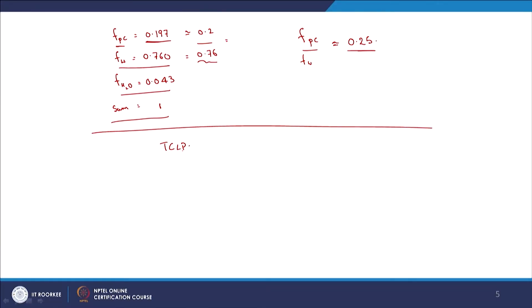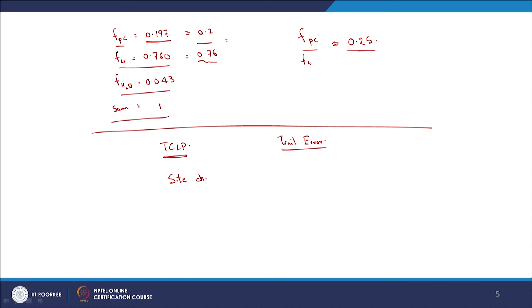Having covered the TCLP approach — which is essentially just passing the regulatory test — and briefly noted the trial-and-error method, let us now look at the better approach: the risk-based approach, based on site characterization. Rather than simply meeting a pH criterion, this approach accounts for actual disposal site conditions.